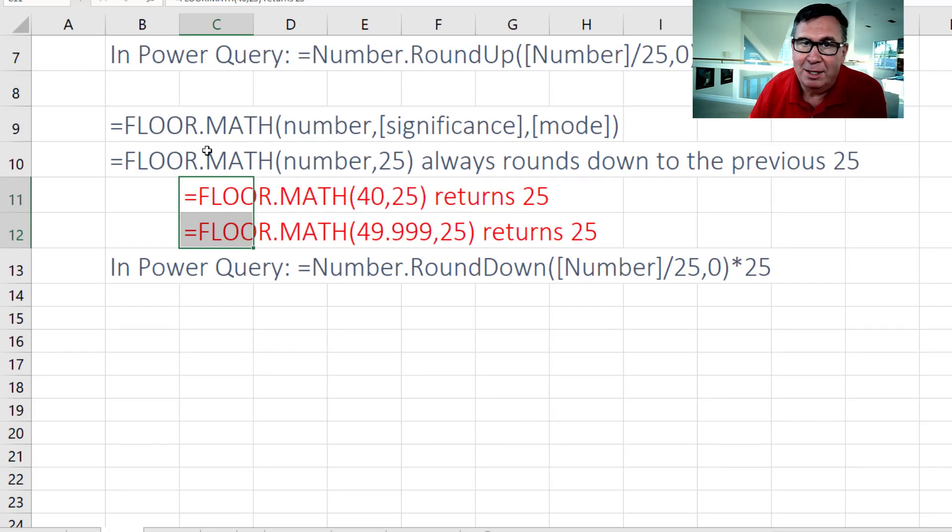And going the other way to always round down, Floor.Math. The number 40 to the nearest 25 will go down to 25. Even 49.999 returns 25.